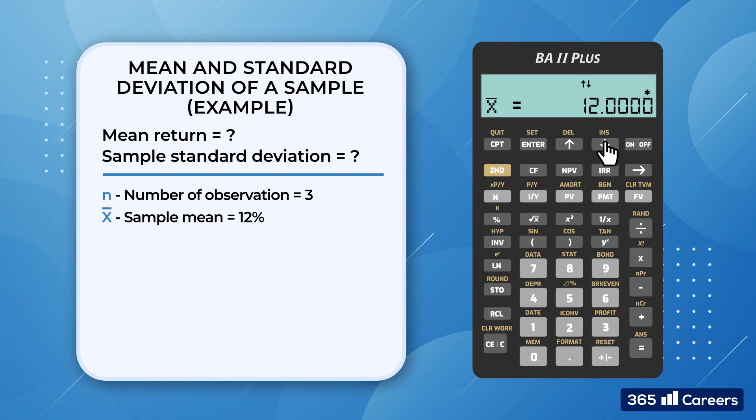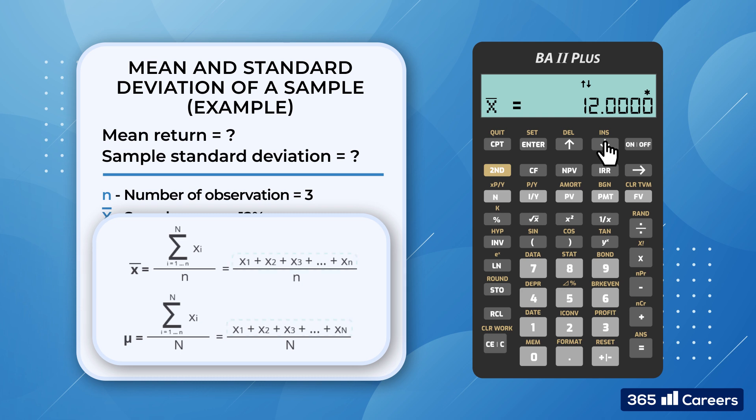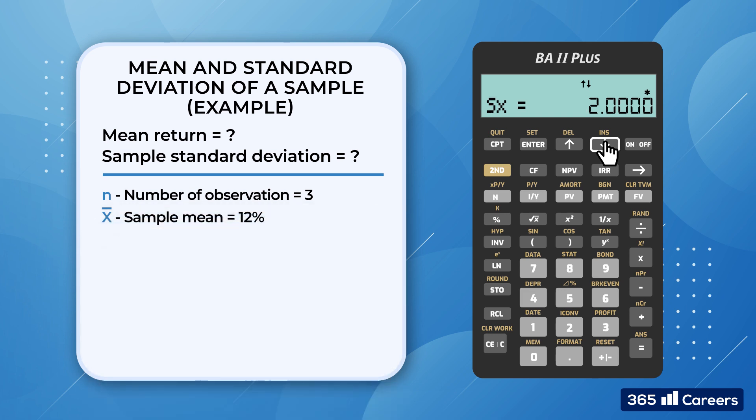Please notice that the calculator shows x-bar and not mu. Why? Because it makes no difference. By definition, both formulas divide the sum of all values by the number of observations. When we scroll further down, we can see sx, which stands for Sample Standard Deviation, and sigma x, which is the population standard deviation. In our case, sx is equal to 2. And that's the answer to the second part of the problem.